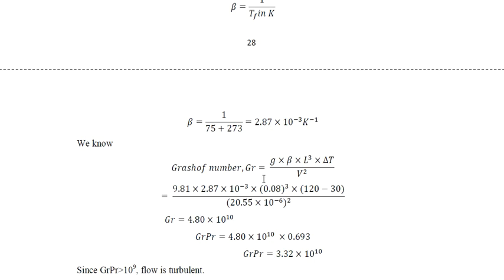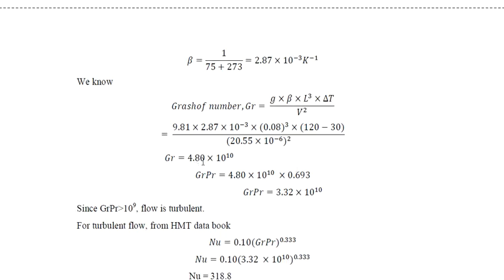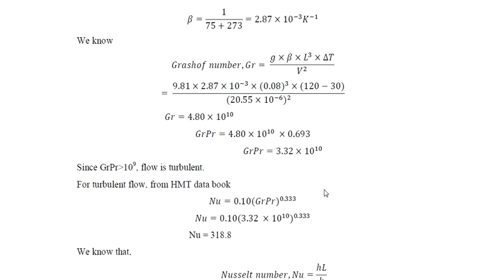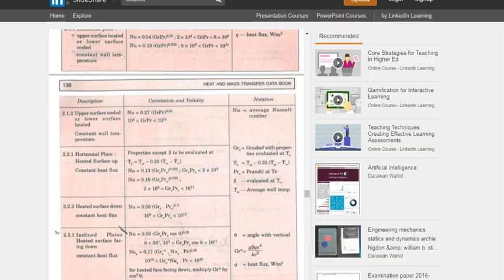The Grashof number: Gr = g·β·L³·ΔT / ν² = 9.81 × 2.87 × 10⁻³ × (2)³ × (120 − 30) / (25.55 × 10⁻⁶)². Here L = 2 m is the vertical height. Gr = 4.8 × 10¹⁰. The GrPr product = 4.8 × 10¹⁰ × 0.693 = 3.32 × 10¹⁰. Since GrPr > 10⁹, we have turbulent flow.